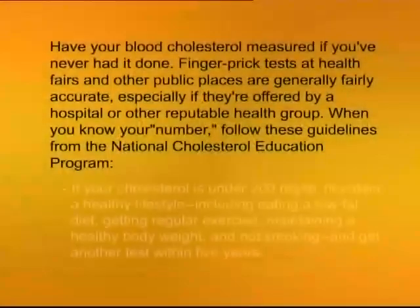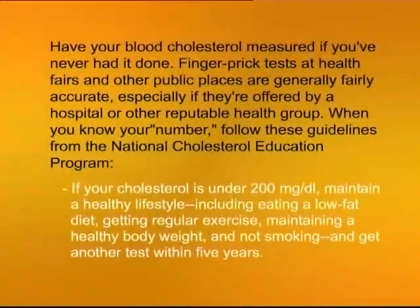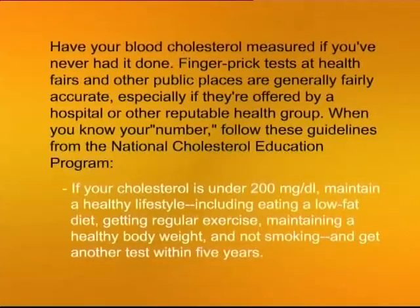In terms of paragraph development, writers use enumeration in paragraphs when they want to itemize a list, a set of properties, topics or series of some kind. Enumeration is a powerful way to establish a series of observations and to emphasize each element. Let's have a look at what we mean when we talk about enumerating. In this paragraph, the items are enumerated in a series of itemized recommendations. If you have instructions to have your blood cholesterol measured — finger prick tests at health fairs are generally fairly accurate, especially if offered by a hospital or reputable health group.